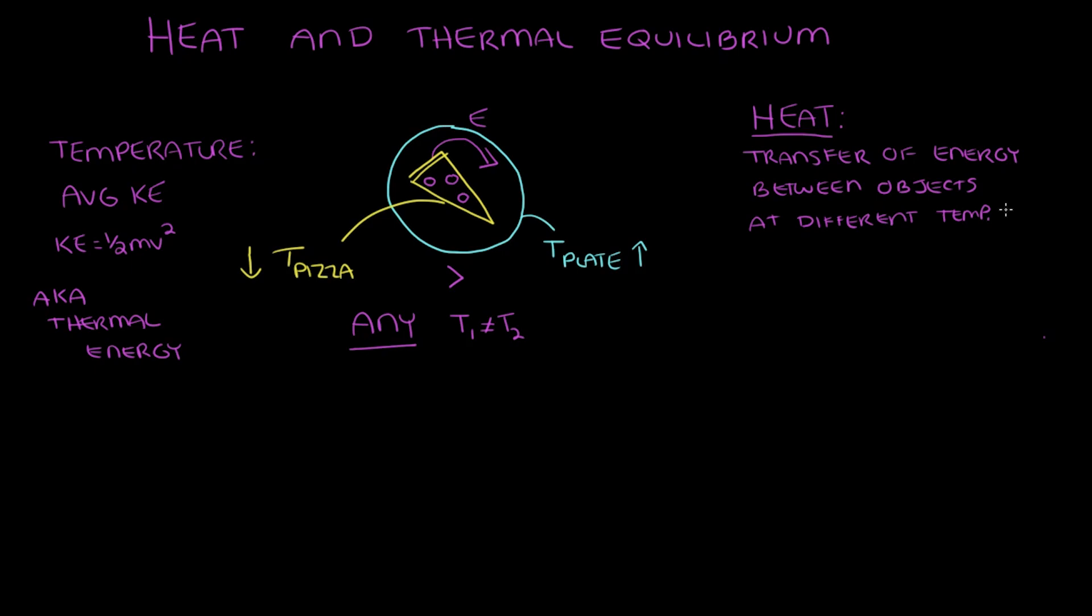As you can see with our pizza and plate, heat is transferring from the hot pizza to the cold plate, from the hot object to the cold object. Why is that? Well, let's go ahead and break down our problem and really dig into what's happening with everything in the system. In real life, a lot of energy is also going to be transferred from the pizza into the air around it. But for this problem, we're going to simplify it to just look at the pizza and the plate.